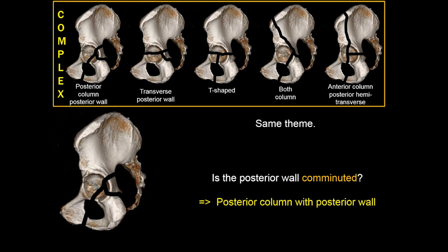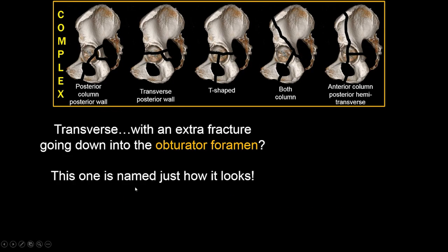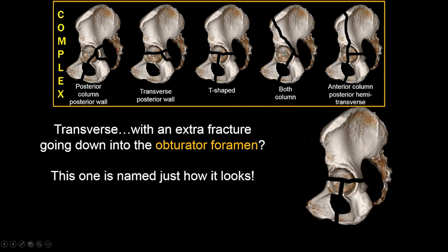Following the same theme, posterior column with posterior wall works exactly the same way: if the posterior wall is comminuted, we describe it separately because it needs a separate surgery. And if we have a transverse fracture with an additional fracture in the axial plane going down into the obturator foramen, it makes a T-shape — and we call it a T-shaped acetabular fracture.